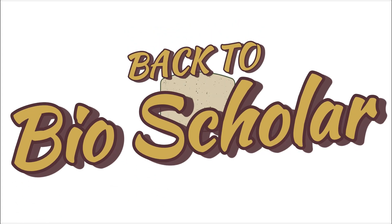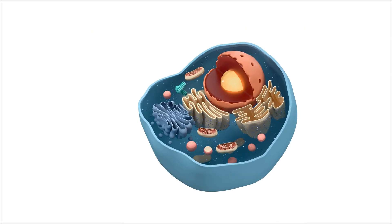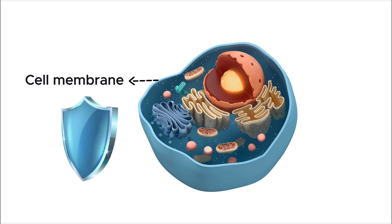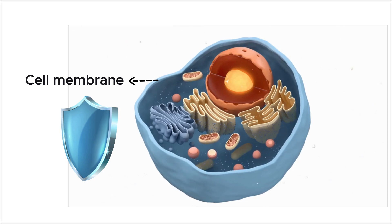Hello everyone, and welcome back to Bioscholar. Our cells are surrounded by a protective barrier called the plasma membrane. This membrane not only shields the cell, but also plays a crucial role in regulating the movement of substances in and out of the cell.